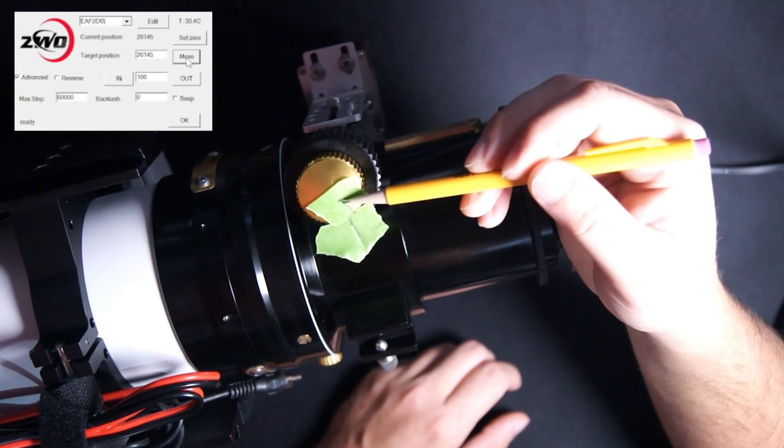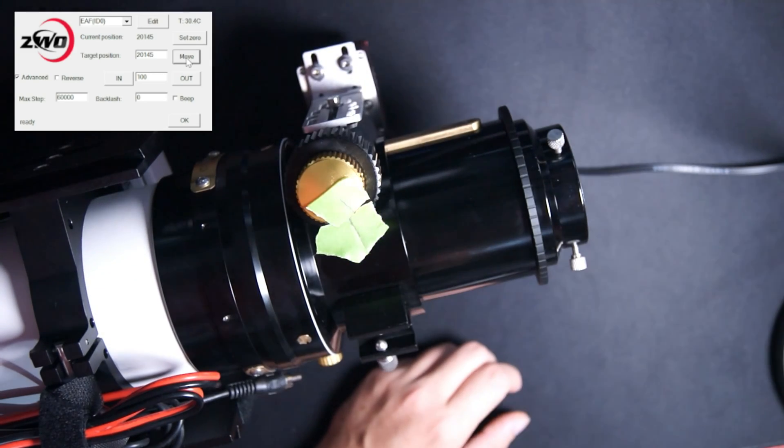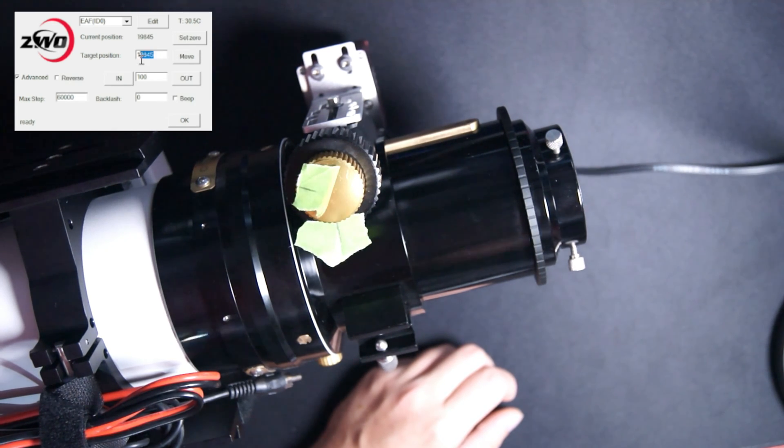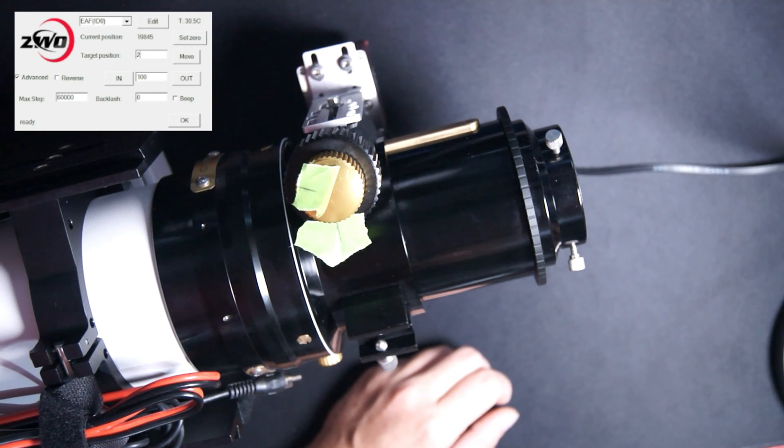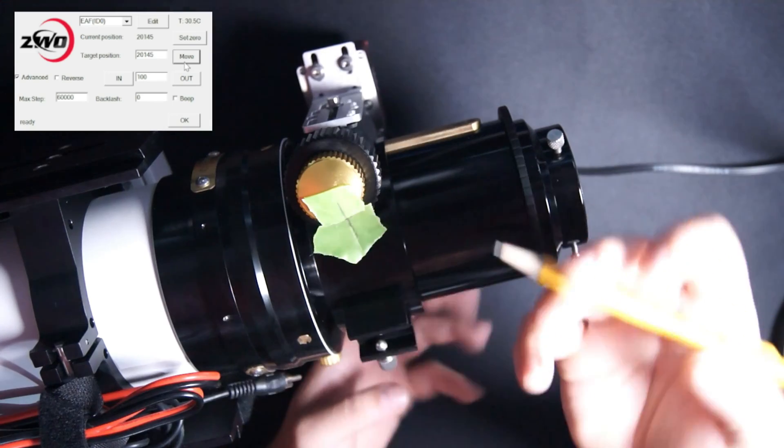Now, as you can see, we're not lined up anymore. Now, we're going to do the opposite. We're going to move in 300 steps and go back to our target position and see where we're at. Now, as you can see, we're lined back up. Why is that?